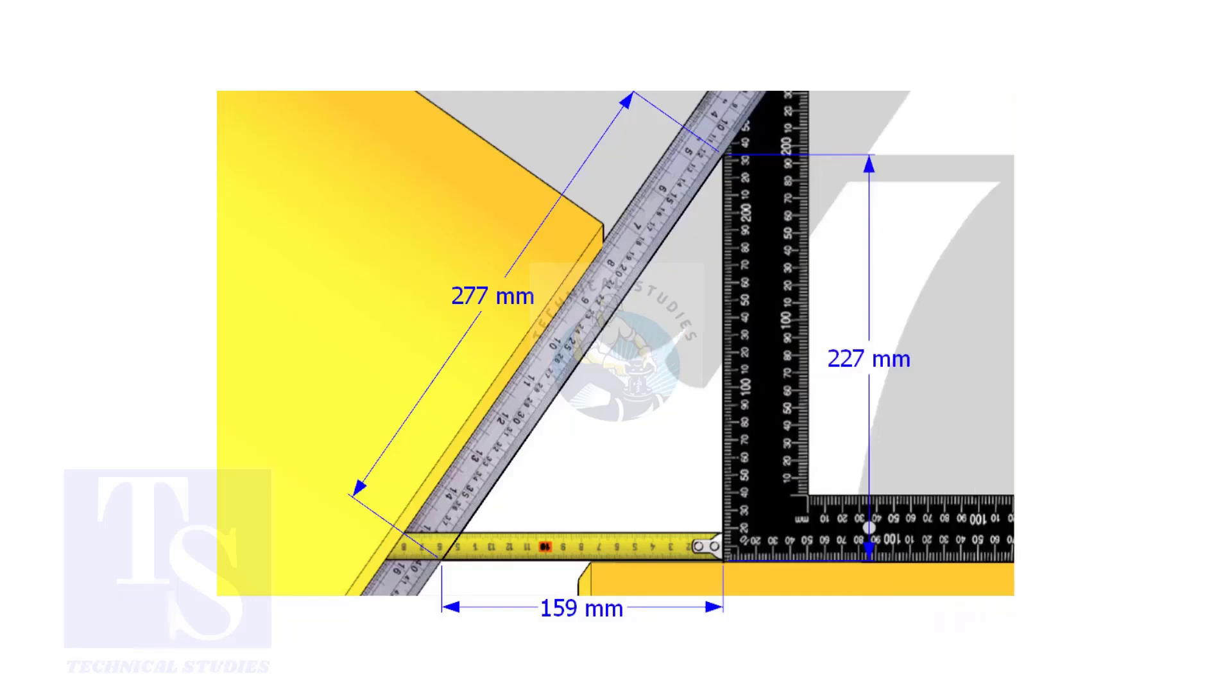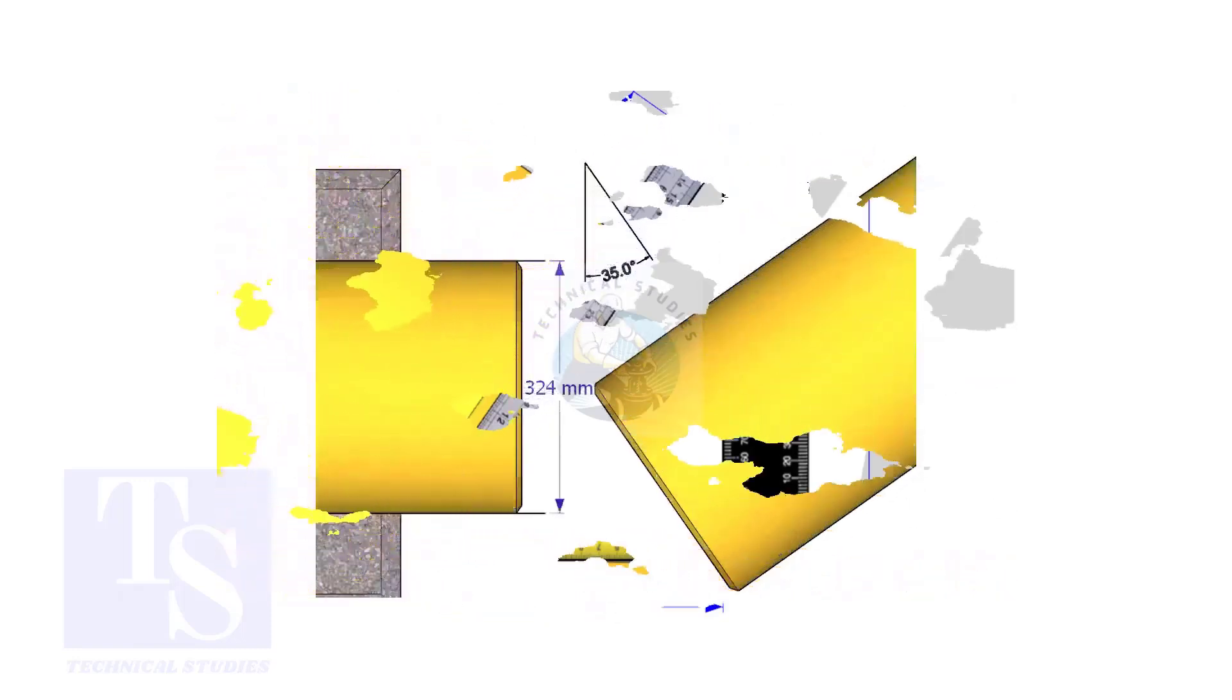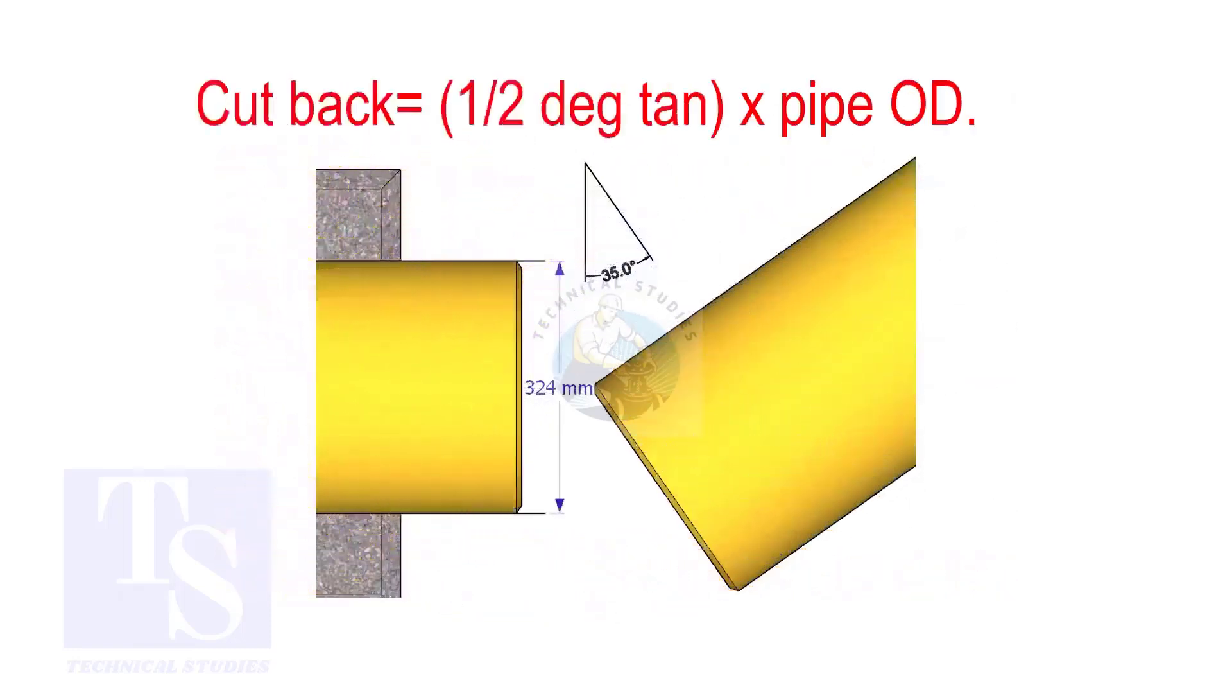How to calculate the cutback of a single cut miter. When it is a single cut, the cutback is half degree tan multiplied by the OD of the pipe.